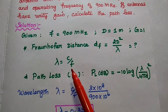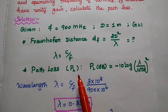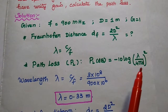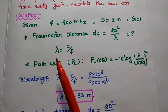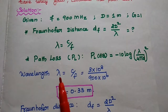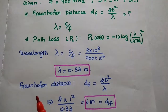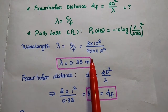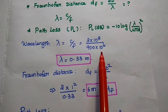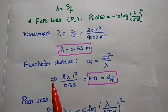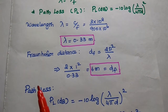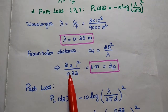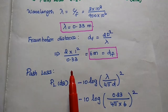We can get the wavelength λ using the formula c / f, and then find the path loss. Path loss is equal to minus 10 log of (λ / 4πd)². First, wavelength λ = c / f, where c is 3 × 10⁸ (velocity of light) divided by the operating frequency 900 MHz, giving λ = 0.33 meters. Then, the Fraunhofer distance df = 2 × d² / λ = 2 × 1² / 0.33, giving the Fraunhofer distance in meters.